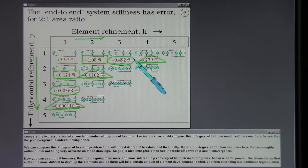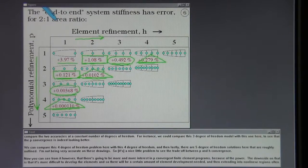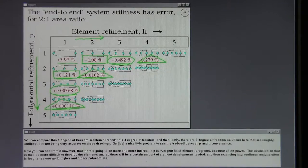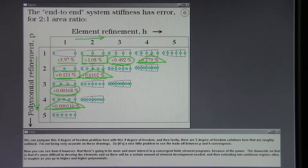One thing you can do is to compare the two accuracies at a constant number of degrees of freedom. For instance, we could compare this three degree of freedom model with this one here to see that the p-convergence is indeed looking better. We can compare this four degree of freedom problem here with this four degree of freedom. And then lastly, there are five degree of freedom solutions here that I'll roughly outline. I'm not being very accurate on these drawings. So, nice little problem to see the tradeoff between p and h-convergence. Now, you can see from it, however, that there's going to be more and more interest in p-convergence finite element programs because of the power. The downside on that is that it's more difficult to develop the elements, and so there will be a certain amount of element development needed, and then extending into nonlinear regions often is tougher as you go to higher and higher polynomials.